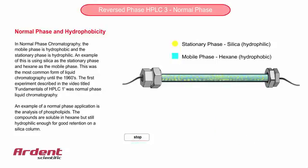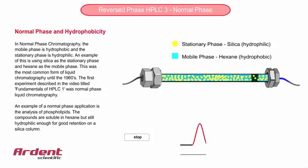As you play the animation, you'll notice that the compounds, displayed here with different colours, elute at different times. This is because of the different degrees of interaction with the hydrophilic stationary phase, and hence different retentions.